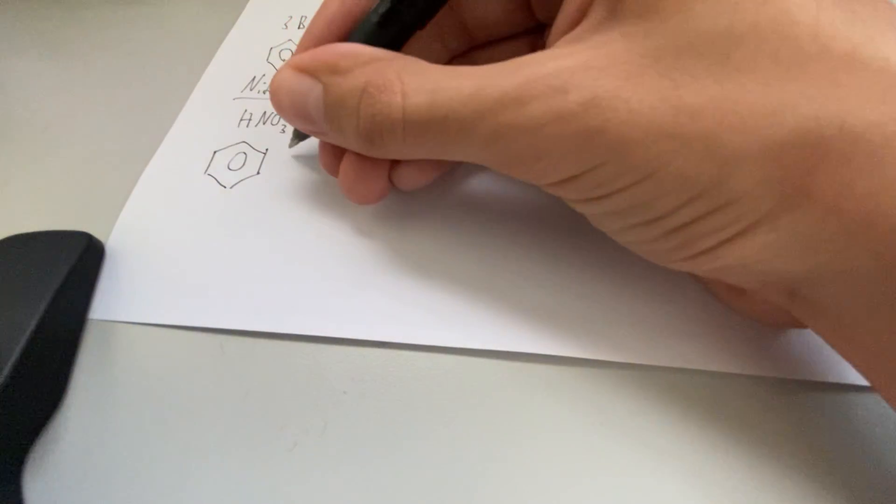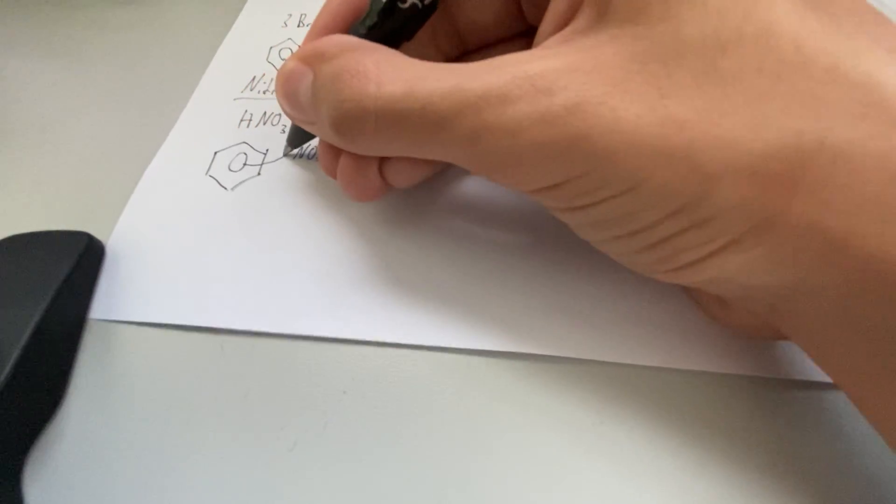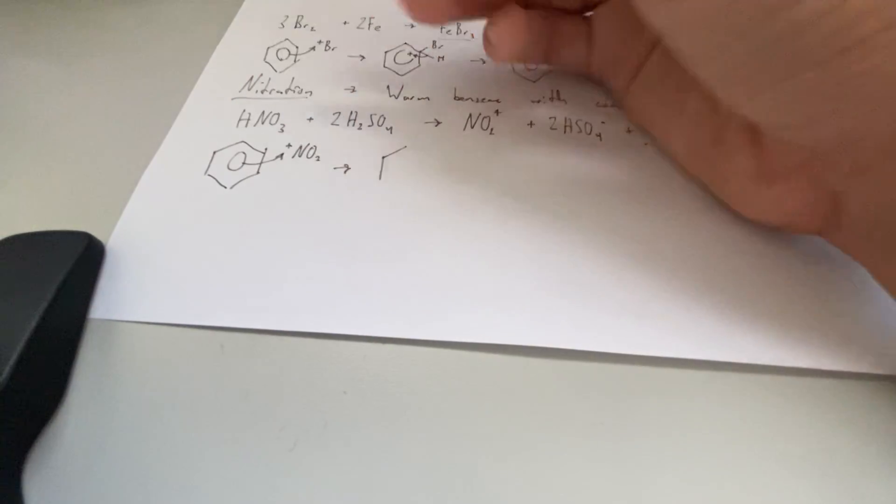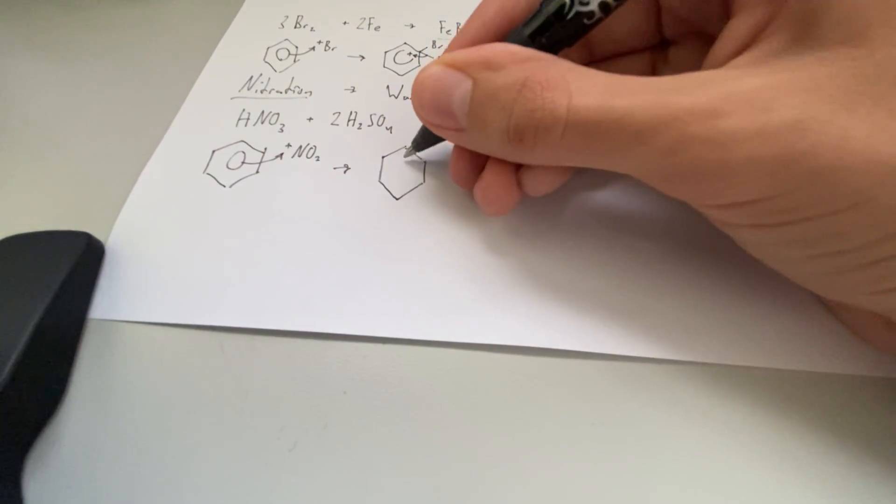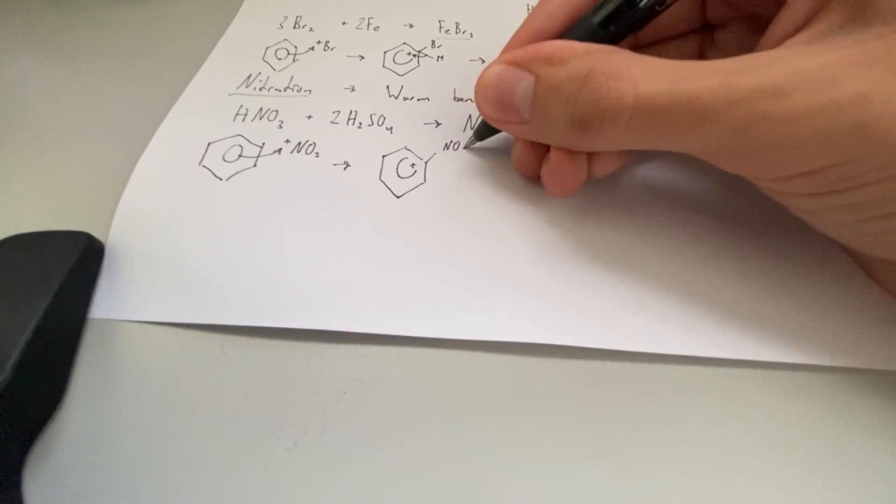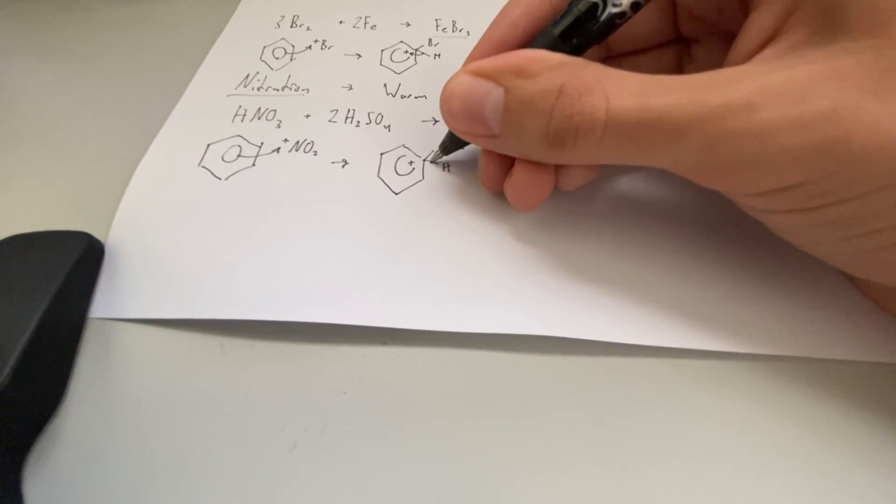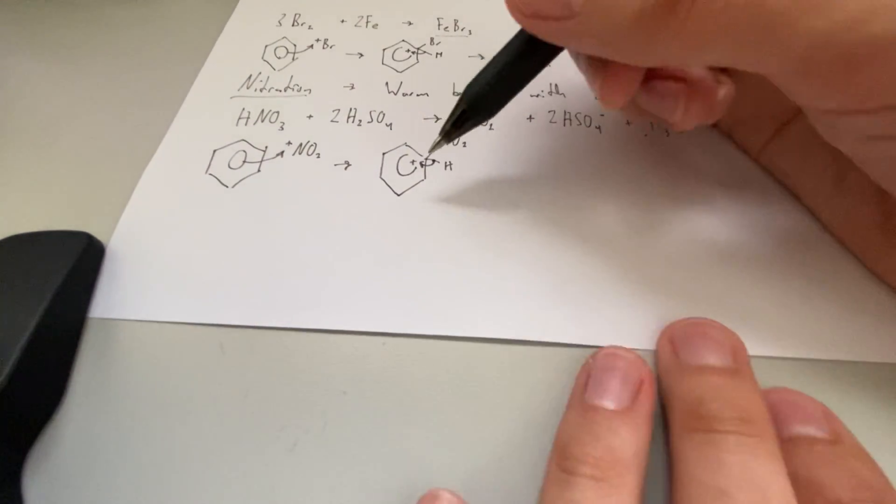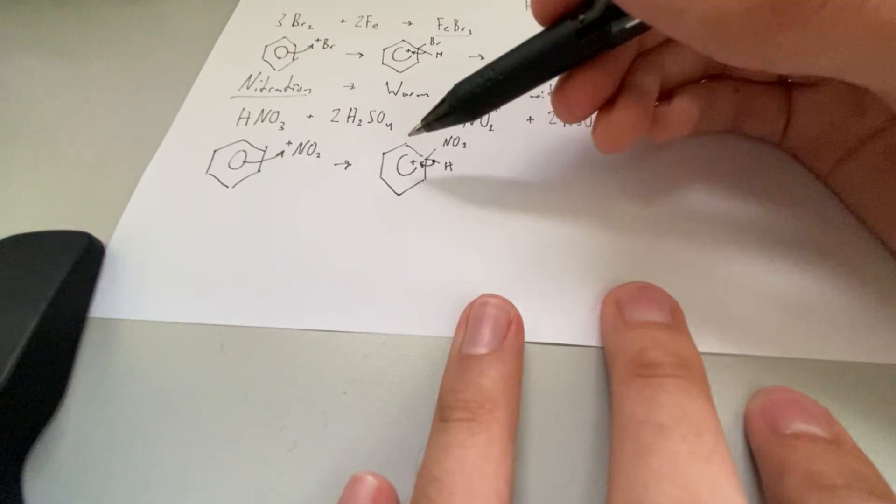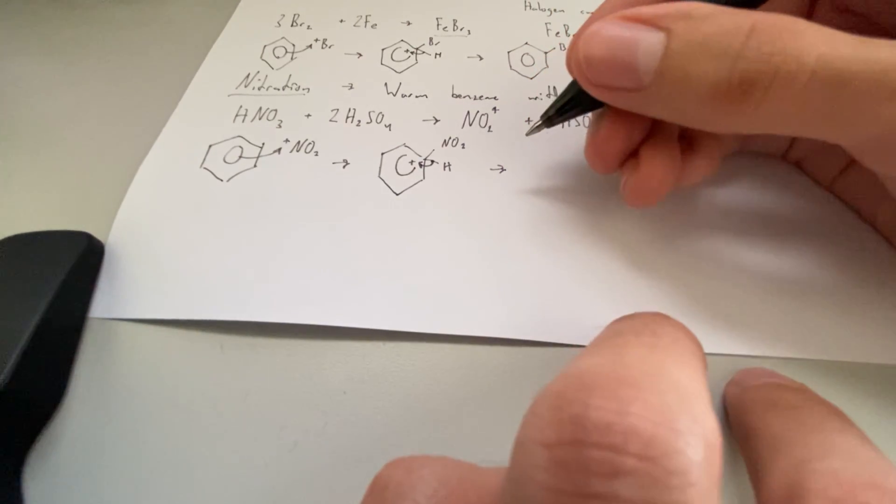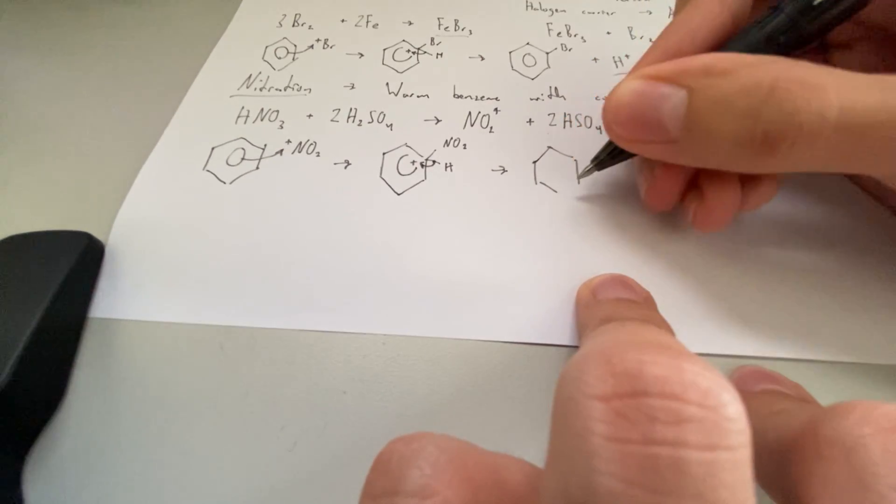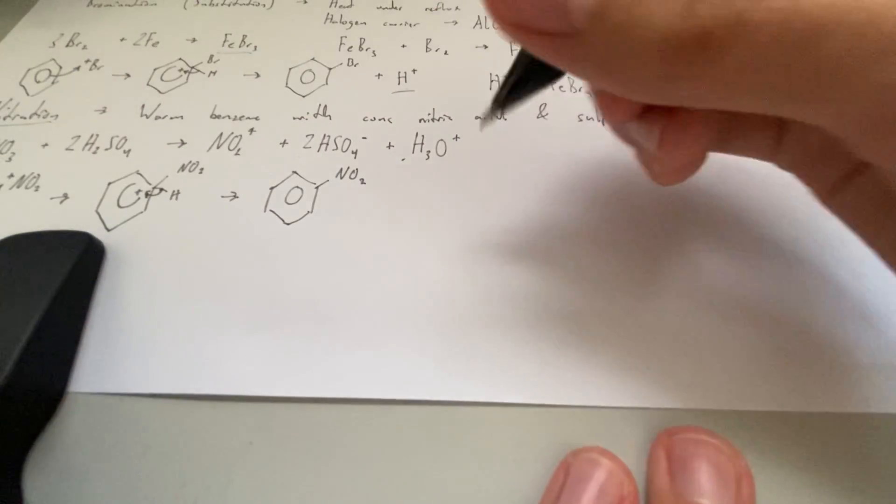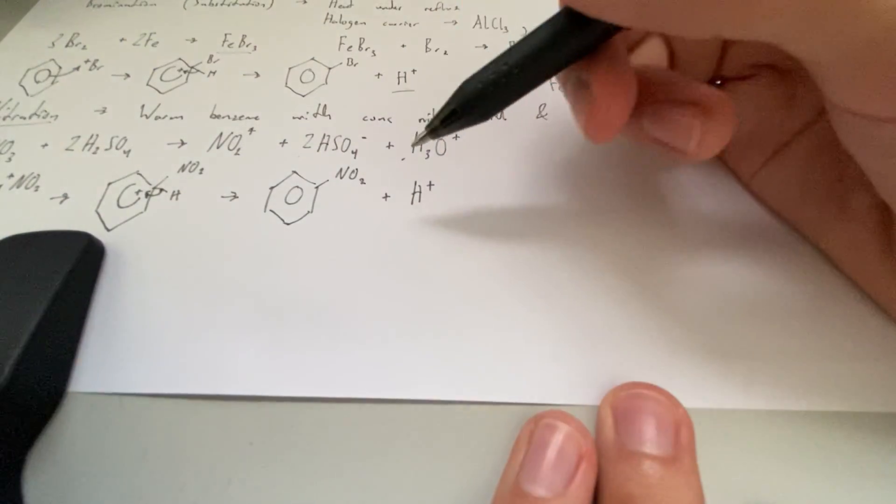What we are interested in is this nitrate ion, which is later going to be used to reform our sulfuric acid catalyst. Now we have our electrophile. We have our ring, and we have NO2. This positive is particularly attractive to the delocalized electrons here, so we're going to end up forming a bond.